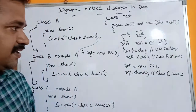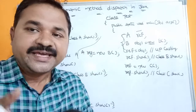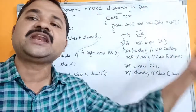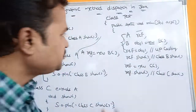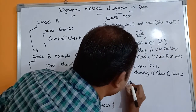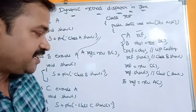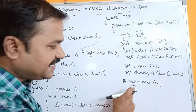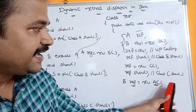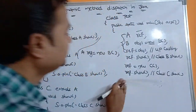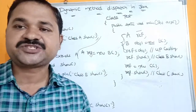Upcasting is always possible in Java, but downcasting is not. Downcasting means the child class reference contains a parent class object. For example, writing B REF = new A() is not a valid statement because we are storing a parent class object in a child class reference, and Java does not support downcasting. This concludes the topic of dynamic method dispatch in Java programming.